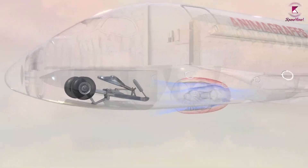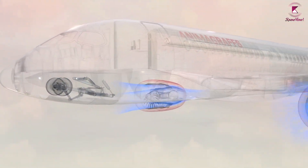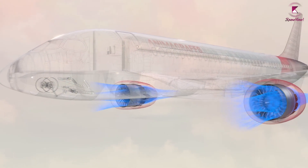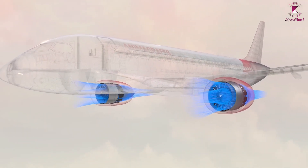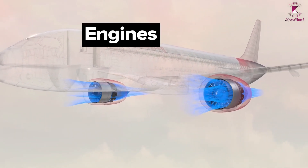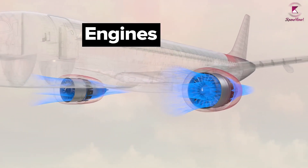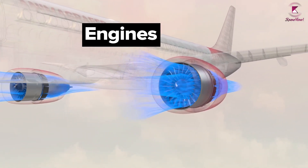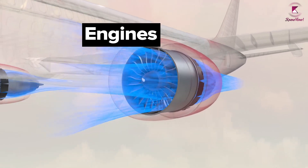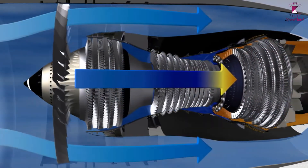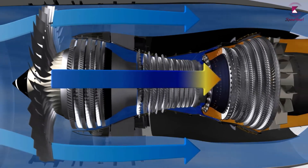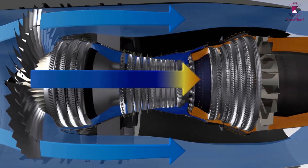Let's understand how a turbofan engine works. Firstly, the air is sucked inside the engine via the fan, and the air divides into two paths. Some part of the air enters the engine core, where combustion takes place.